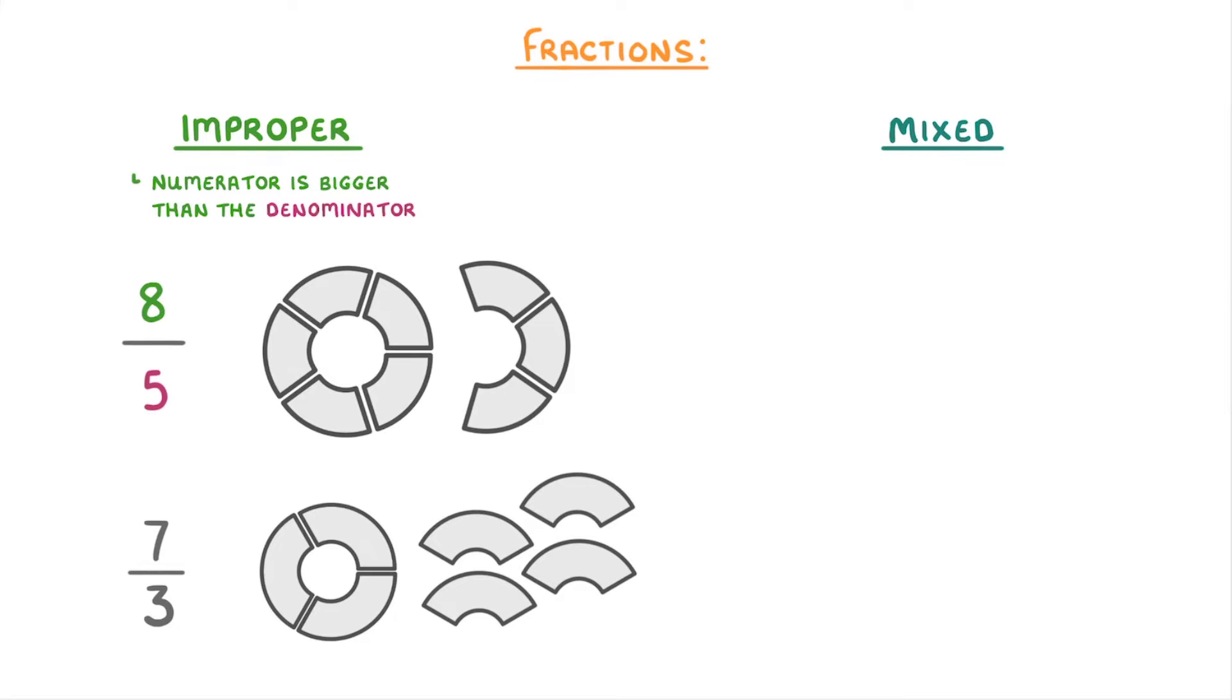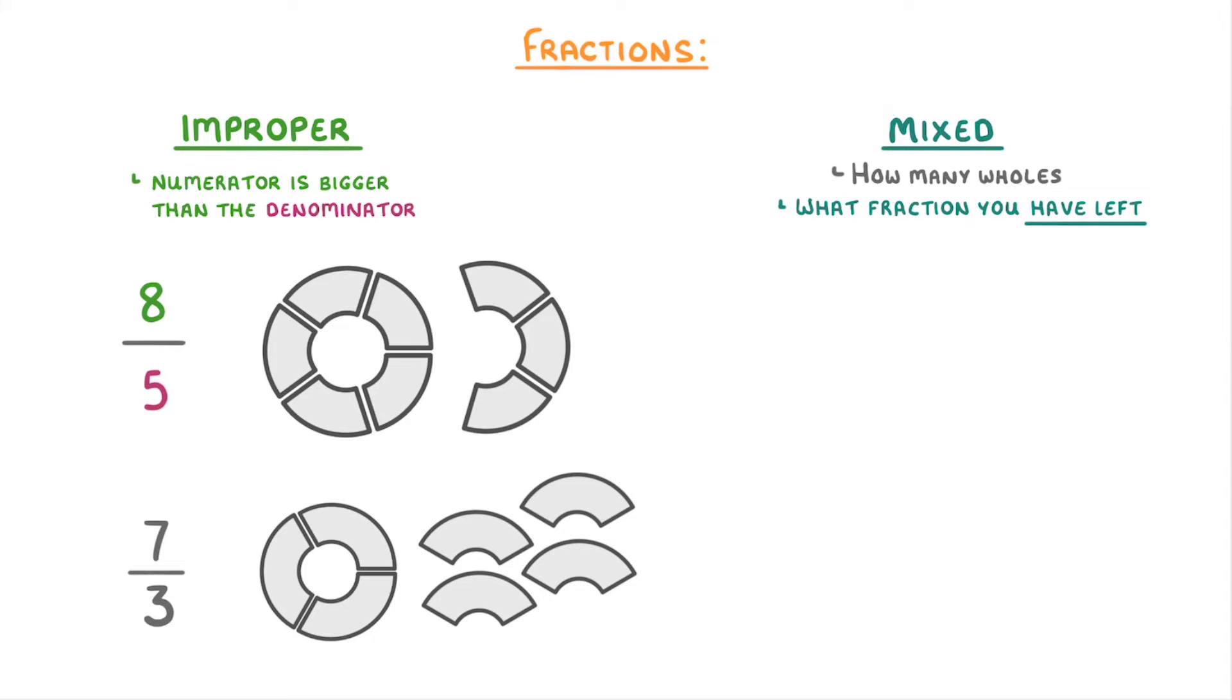You can also write these fractions as mixed numbers, which is where you say how many wholes you have and what fraction you have left. So for this eight-fifths example, we effectively have one whole and three-fifths left.